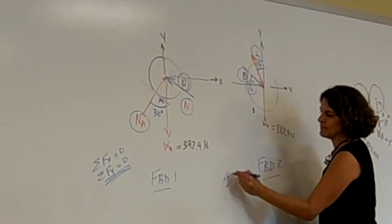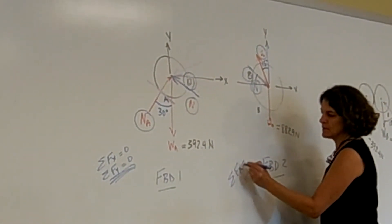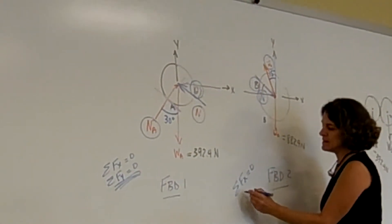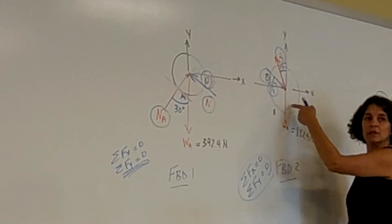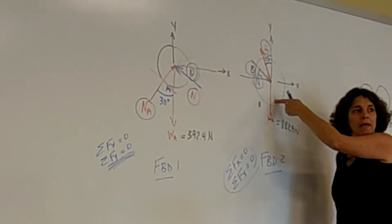What equations do I have for this one? Sum of the forces in x and sum of the forces in y. Two equations, how many unknowns? Three. I can't solve for these.